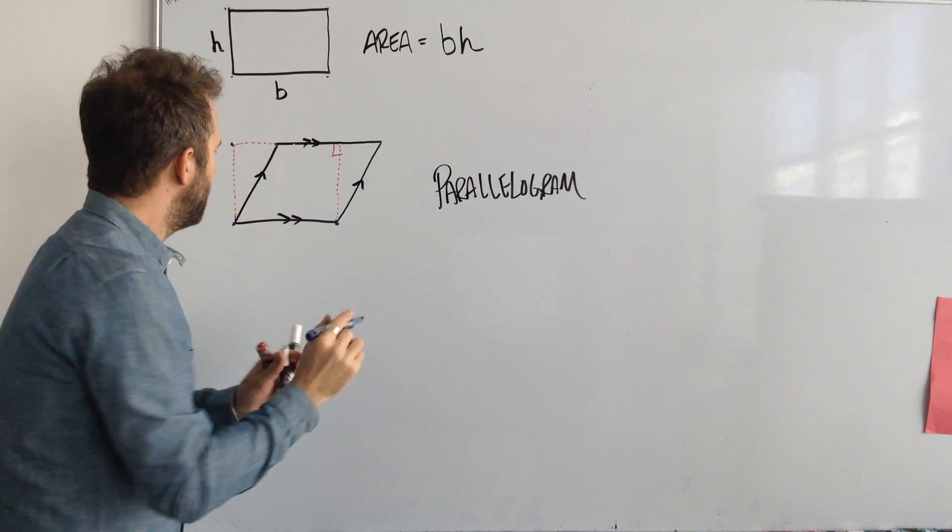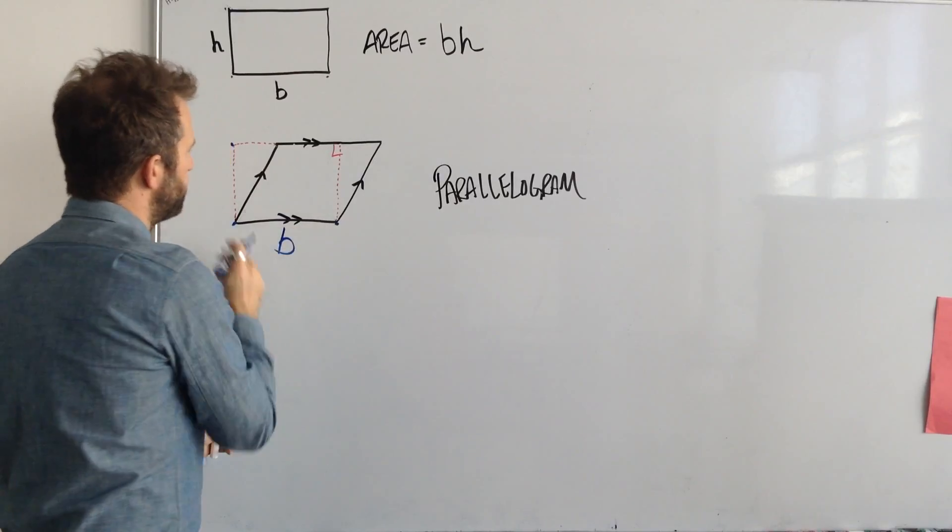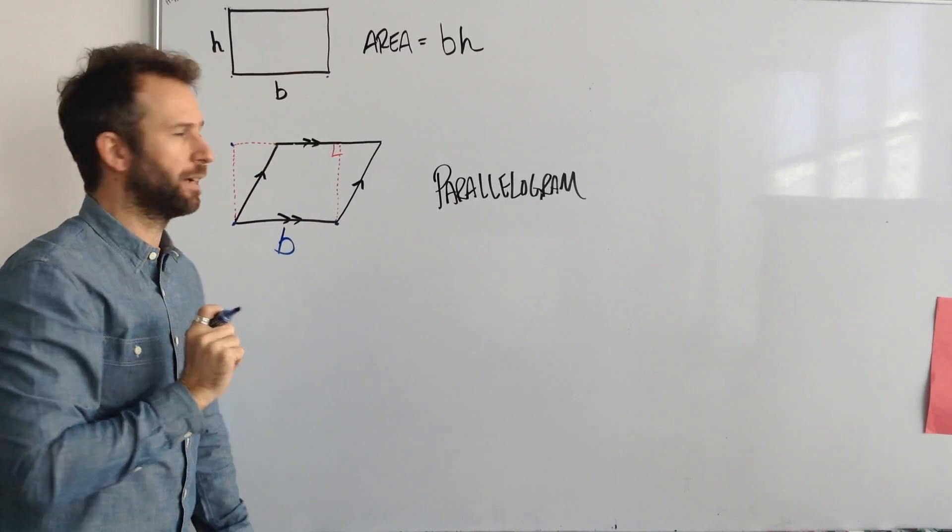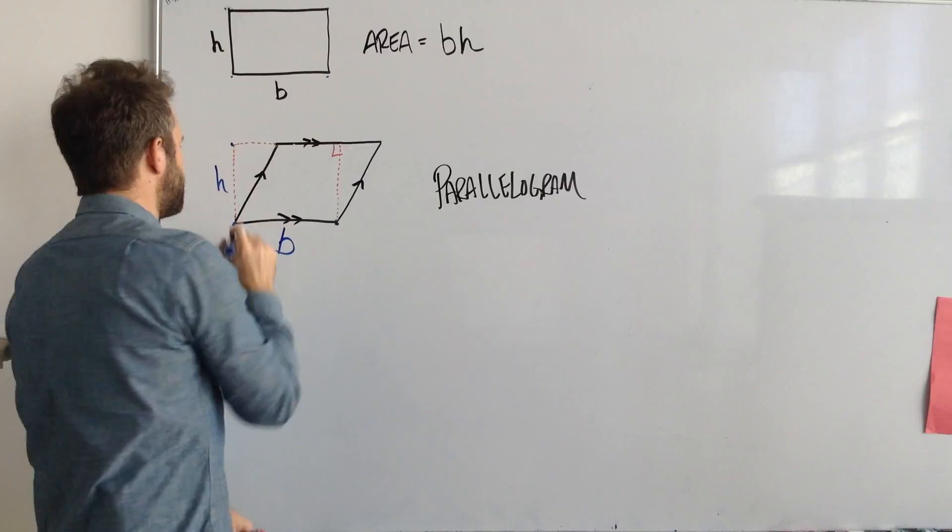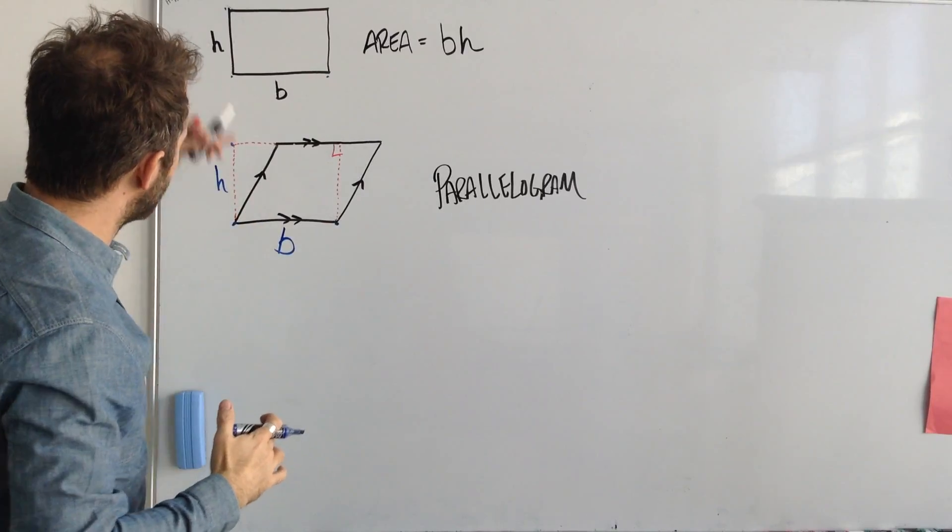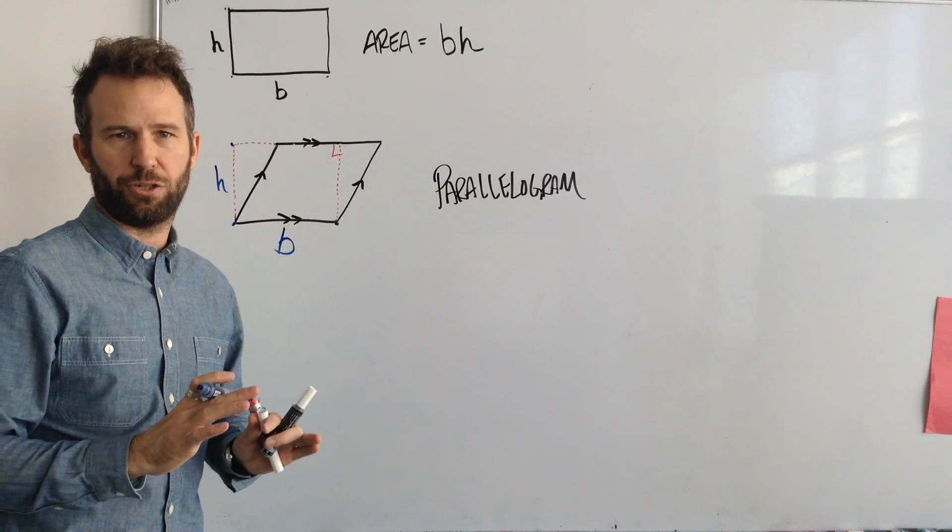So essentially our base, which was b in the other rectangle, and our little h here, the height of the actual parallelogram, has not changed.